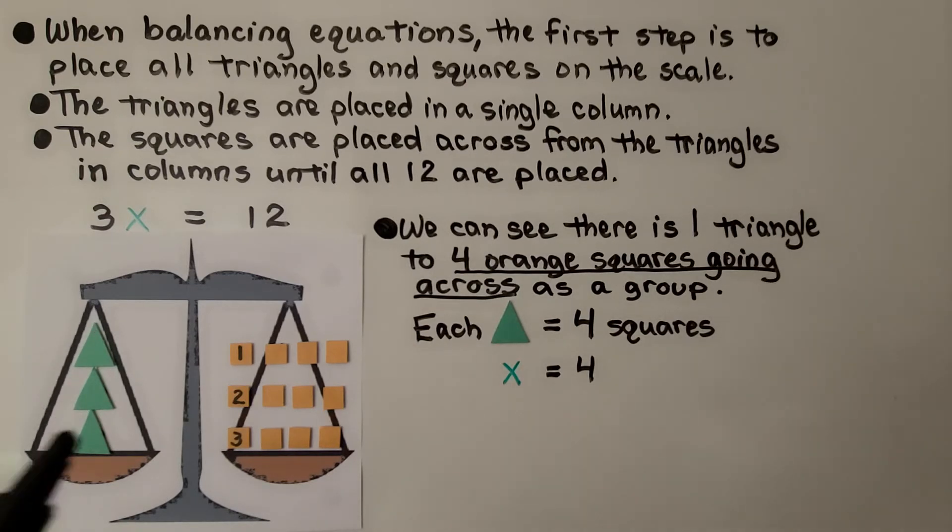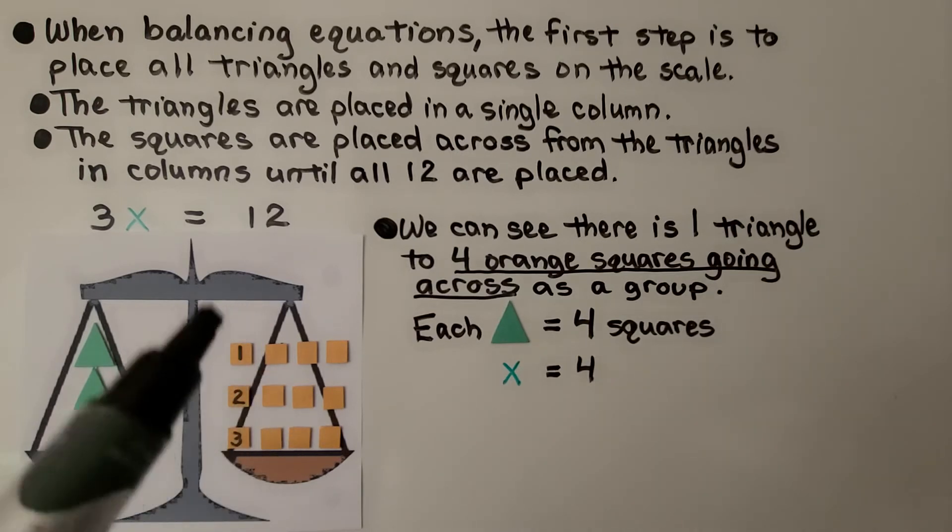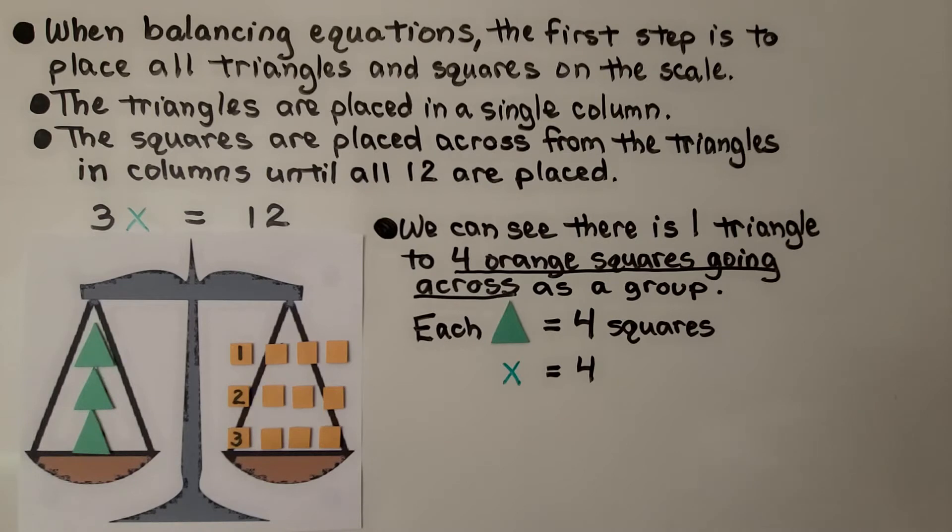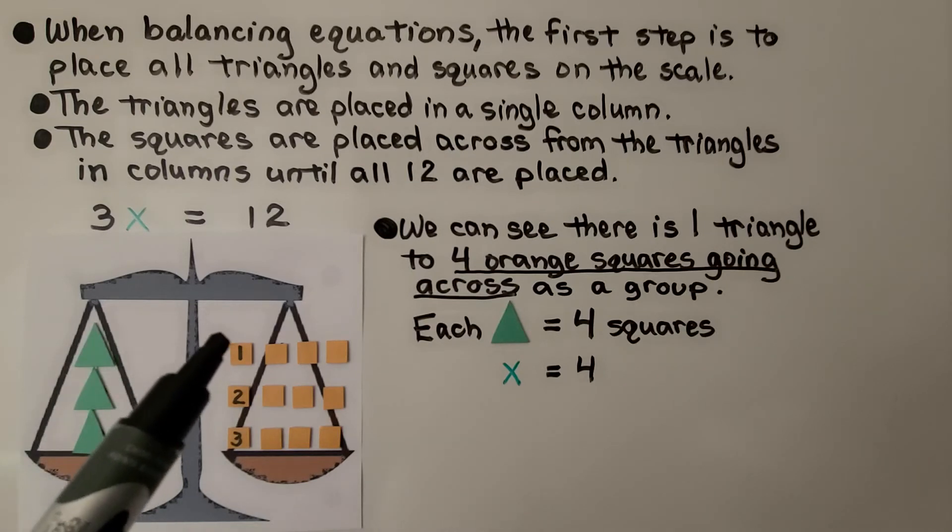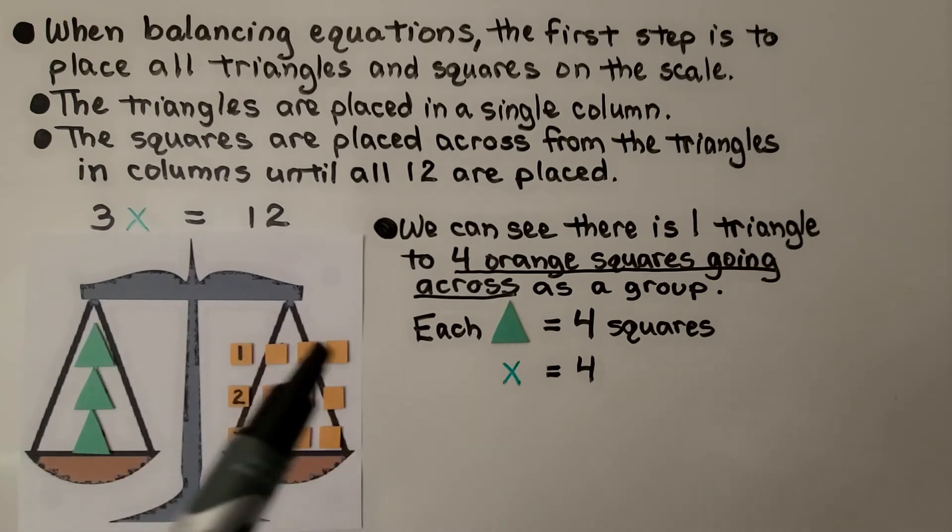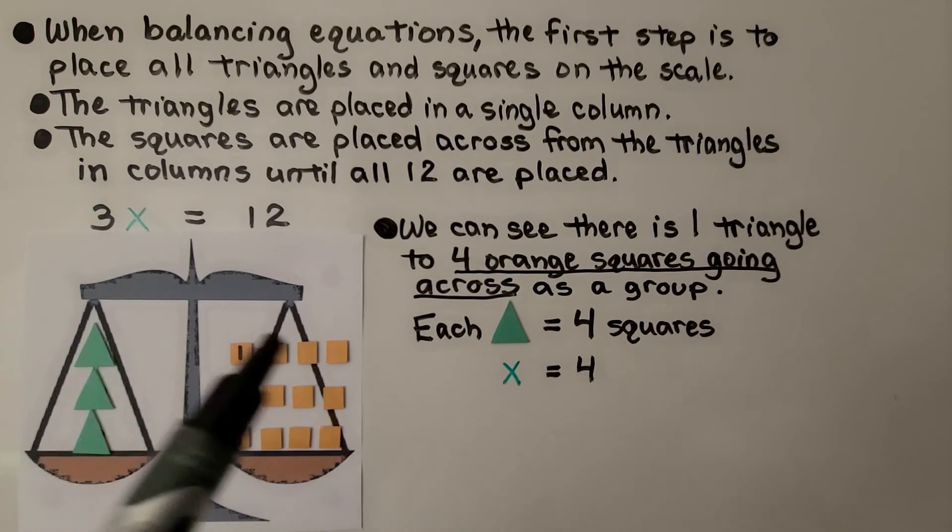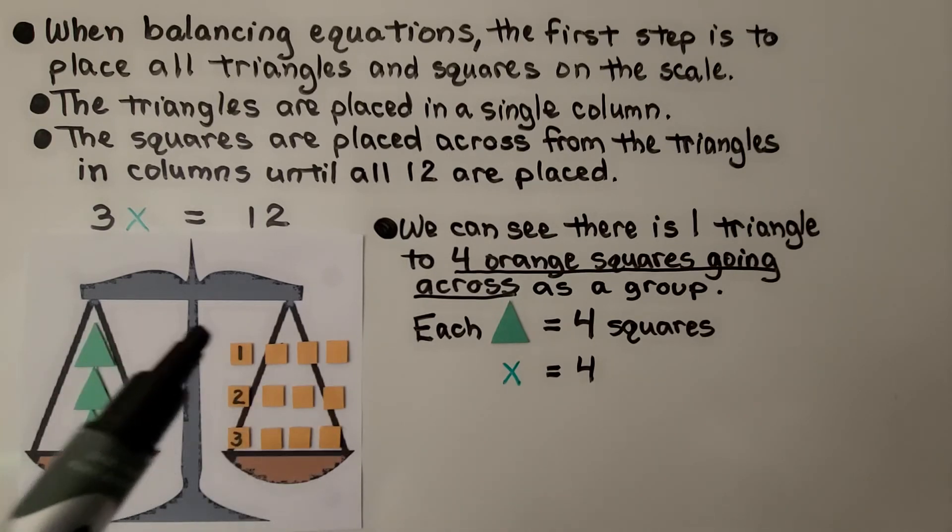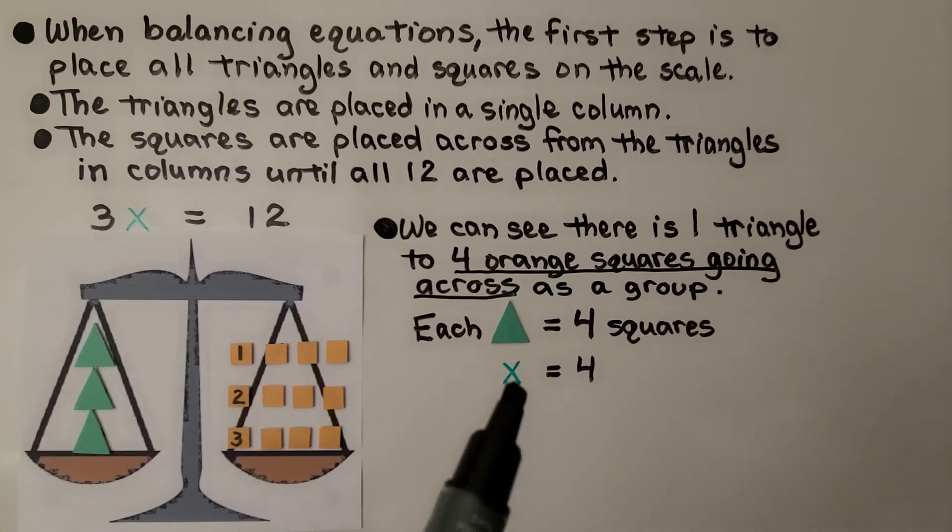And the squares are placed across from the triangles in columns. That's going up and down until all twelve are placed. So we go one, two, three, because there's three here. And we go four through twelve until they're all placed. And we can see there is one triangle to four orange squares going across as a group. Each triangle is equal to four squares. So x is equal to four.